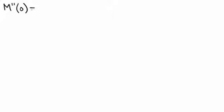Just as was the case for the first derivative of the moment-generating function, for the second derivative of the moment-generating function, the only place where t occurs is in the function e to the t. So I'm going to start by rewriting it with the e to the t's removed, because e to the 0 is just 1.